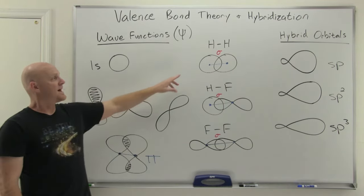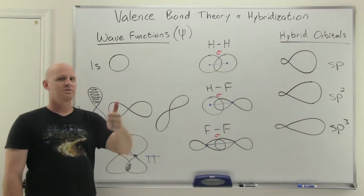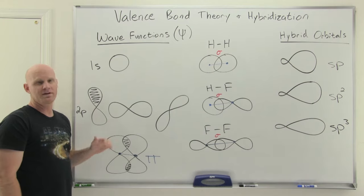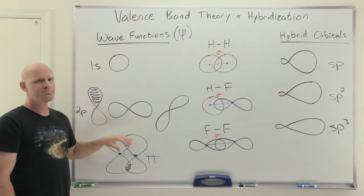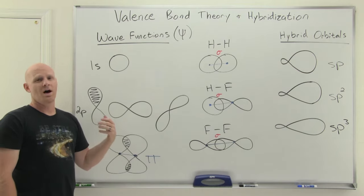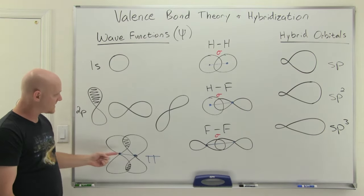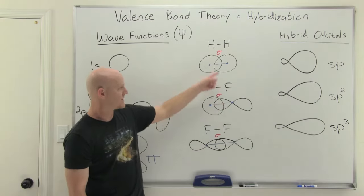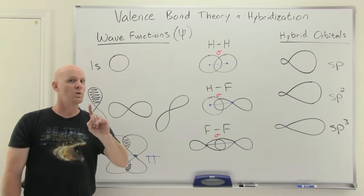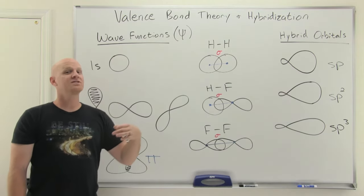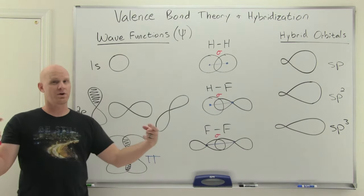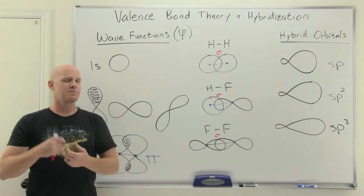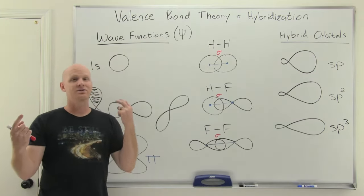In summary: end-to-end overlap of any two orbitals is sigma overlap, but side-to-side overlap of P orbitals — and only P orbitals — is pi overlap. We'll only have pi bonds in double and triple bonds. You can only make one sigma bond between any two atoms — that's always the first one made. If you're going to make additional bonds, they can't be along the internuclear axis, so any additional bonds are sideways overlap of P orbitals. A double bond is one sigma and one pi; a triple bond is one sigma and two pi bonds.